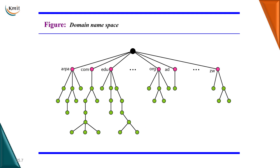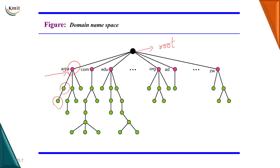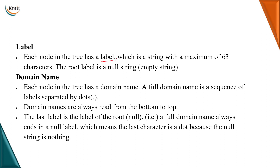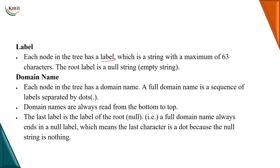These hierarchical structures are inverted tree structures with the root at the top, and they can have as many as 0 to 127 levels of domain namespace. The domain namespace is organized with the root server at the top and then other domains in a hierarchy. Every domain has a label attached to it. Each node in the tree has a label, which is a string of a maximum of 63 characters. For example, the label here is 'arpa', here it is 'com', and here it is 'edu'.